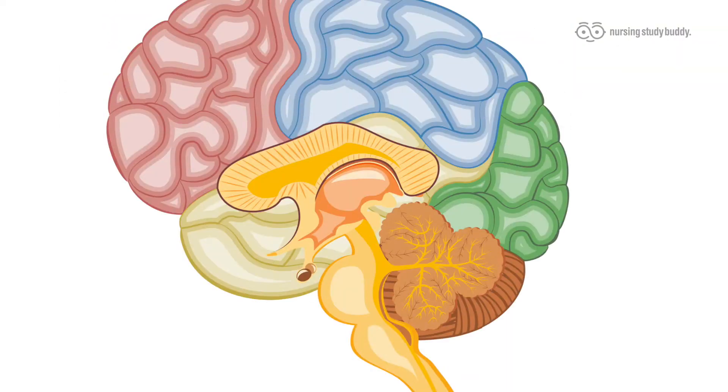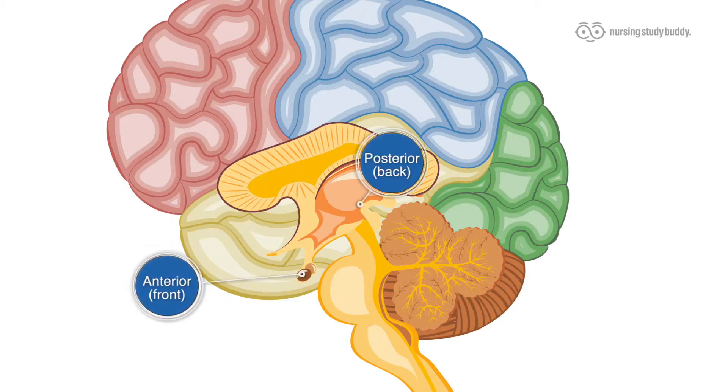You know the saying, big things come in small packages? Here it really applies. The anterior pituitary gland is in the front of the pituitary, while the posterior pituitary gland is in the back.